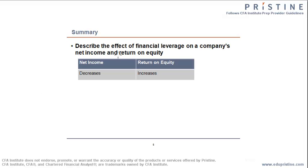Let us summarize what we have learnt. The effect of financial leverage on a company's net income and return on equity can be summarized as: as the amount of financial leverage increases, the net income for the company decreases. However, the return on equity for the company increases.